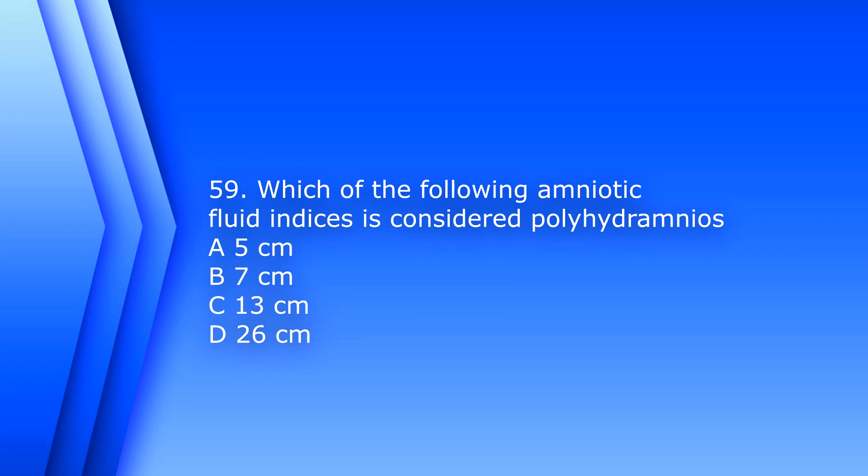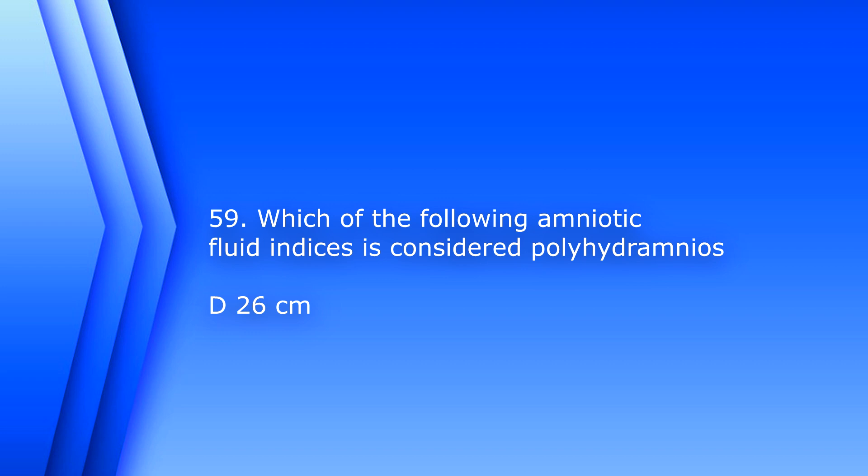Question 59. Which of the following amniotic fluid indices is considered polyhydramnios? A. 5 cm, B. 7 cm, C. 13 cm, D. 26 cm. The answer is D, 26 cm. Renal agenesis — remember, polyhydramnios means increased amniotic fluid.